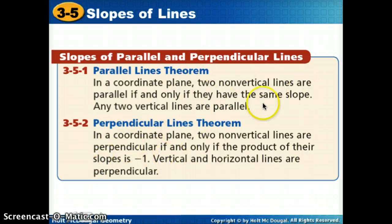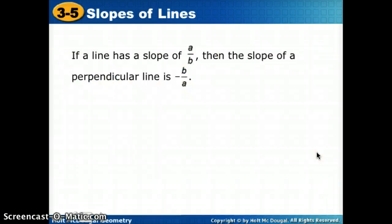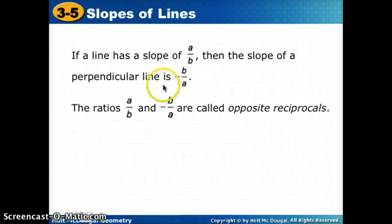So parallel lines, same slopes, perpendicular lines. If a slope of any number, a over b, it's perpendicular line. We're going to take the reciprocal. So we're talking about what gives us the product of negative 1. If I flip this fraction over, I'd have b over a. And if I want the product to be negative, if that's positive, this has to be negative. These would be our two slopes. So the ratios a over b and negative b over a, those are called opposite reciprocals.